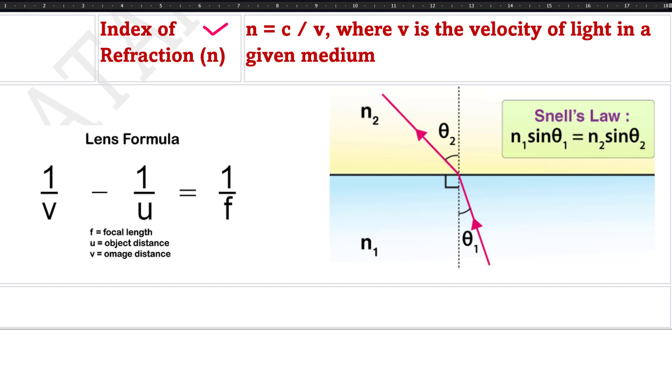Then we have the lens formula which says that 1/f = 1/v - 1/u, where f is the focal length, u is the distance of the object, and v is the image distance. We also have Snell's law which says that n₁sinθ₁ = n₂sinθ₂. Here n₁ is the refractive index of the medium and n₂ is the refractive index of air. When a ray of light travels from one medium to another medium, then n₁sinθ₁ = n₂sinθ₂.